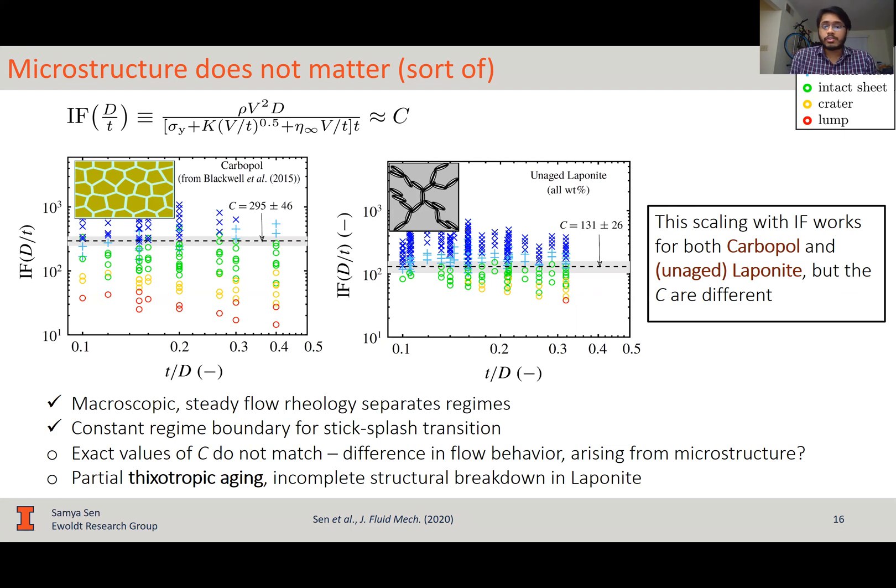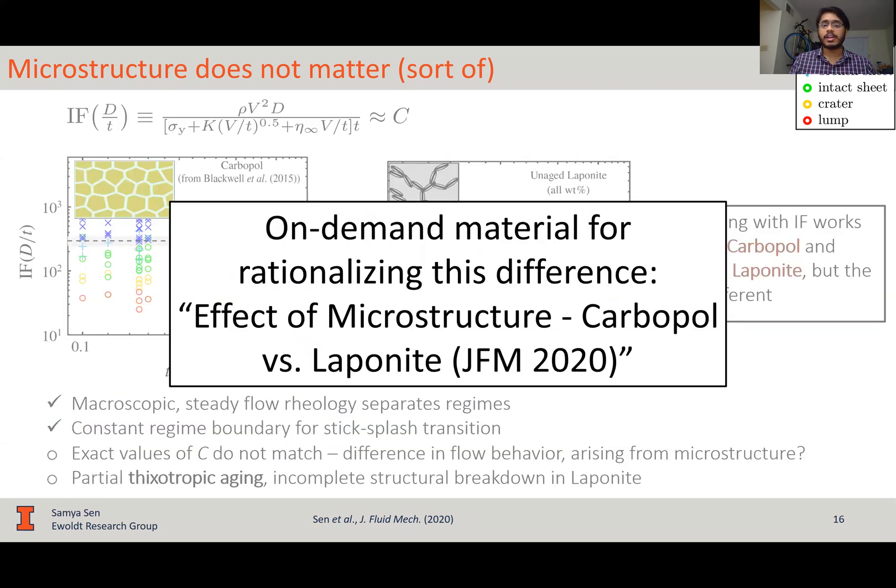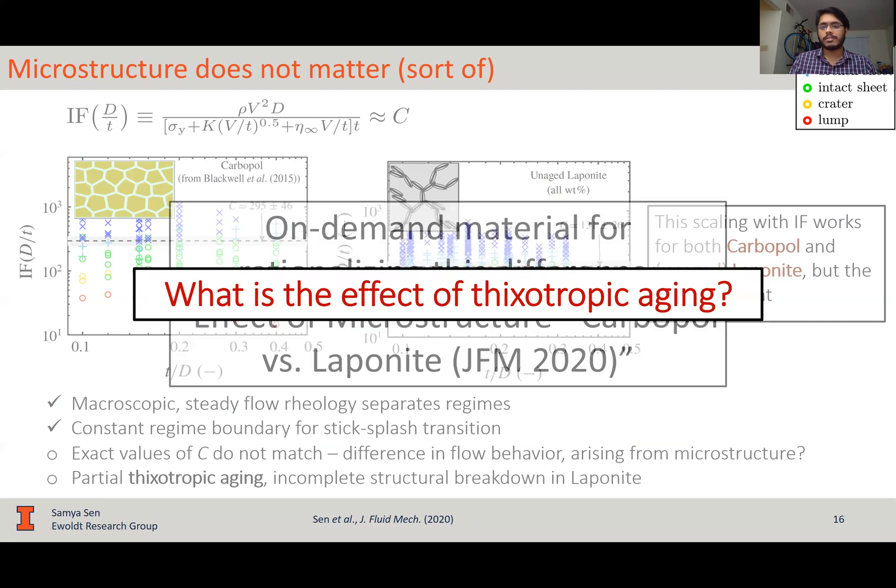But this could also be because of partial thixotropic aging in laponite, because as I showed you earlier, it's a thixotropic clay. Now, I'll not be going into details of why there's a difference between carbopol and laponite. We rationalize this in a supplementary material shown over here. But I'll be moving to a more interesting part of the talk is what is the effect of thixotropic aging.